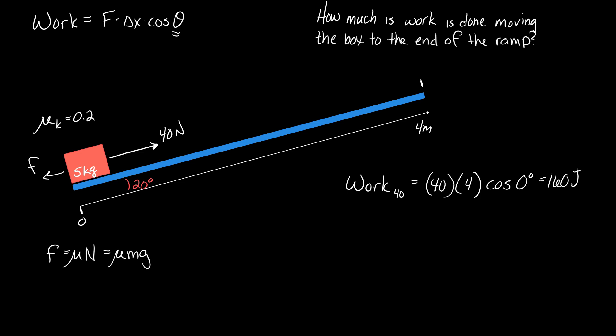So this is mu mg cosine. In this case, the theta is 20 degrees, the angle of the ramp. This is just to get the size of the force, by the way.